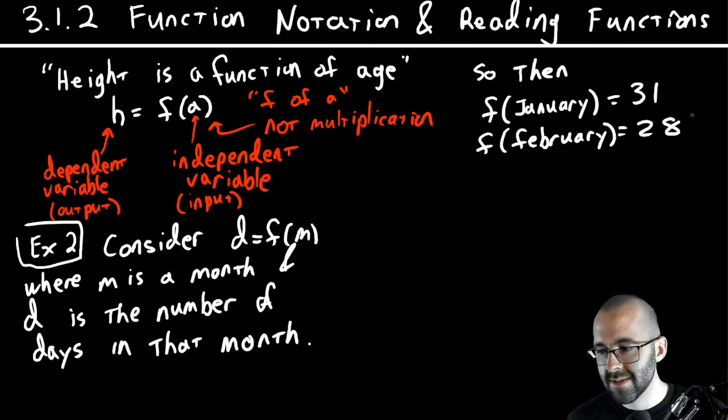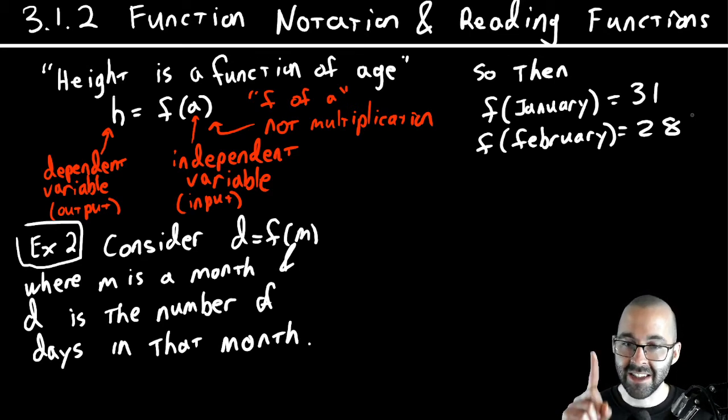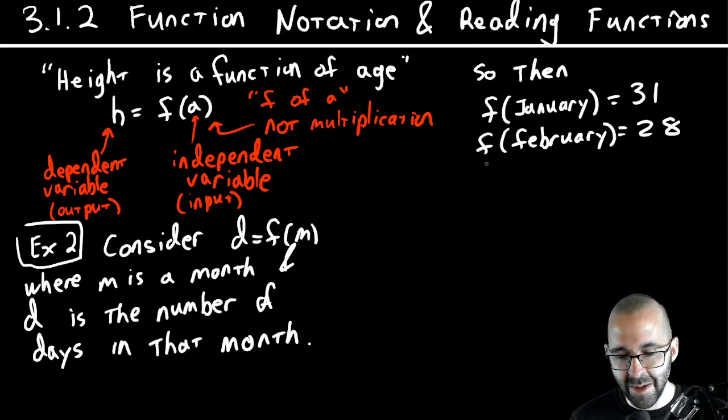And you can keep on doing this. f of February equals 28, usually. So maybe this isn't a function after all, because sometimes it's 28, sometimes it's 29. Because remember, every input should have only a single output. So this is 28 and 29, it's not a function anymore. But that's kind of splitting hairs, we'll not really worry about that.